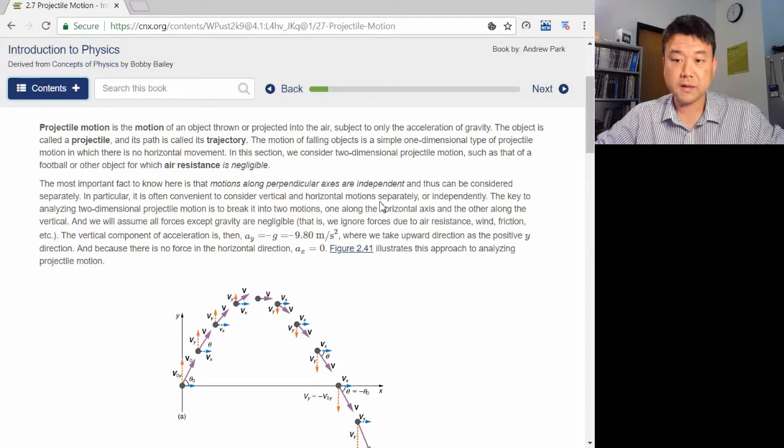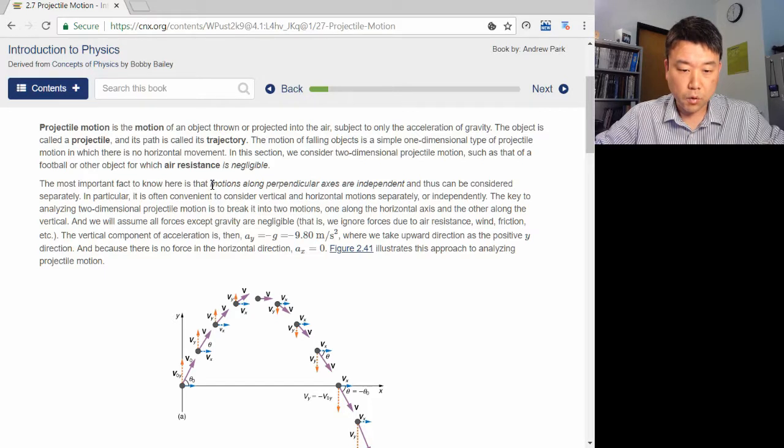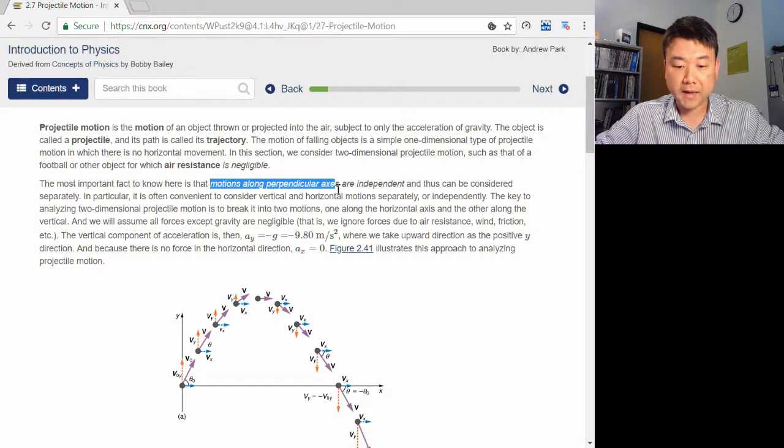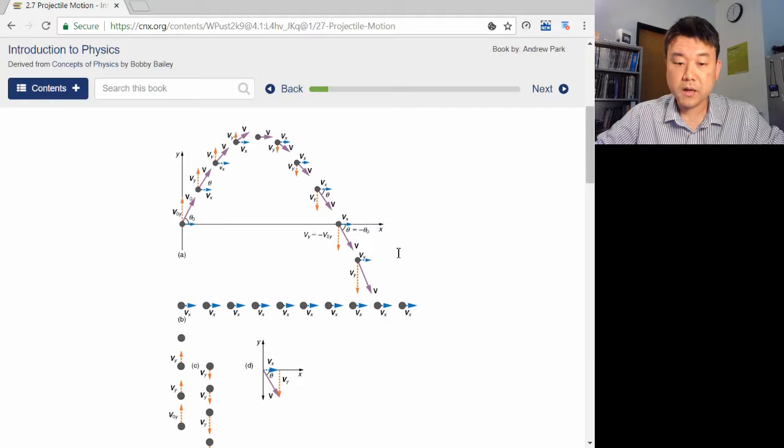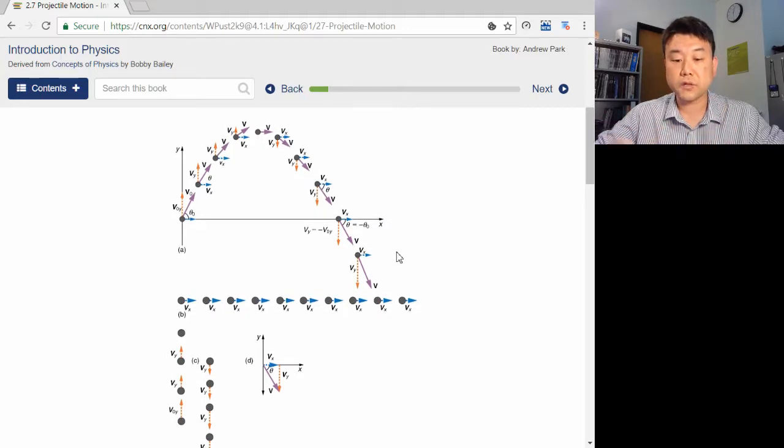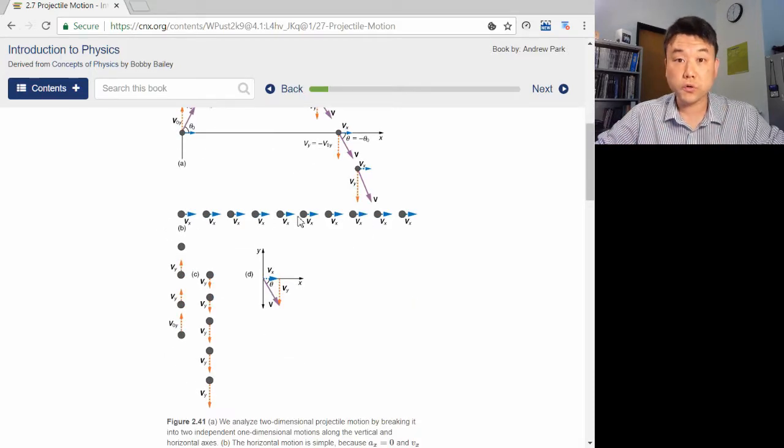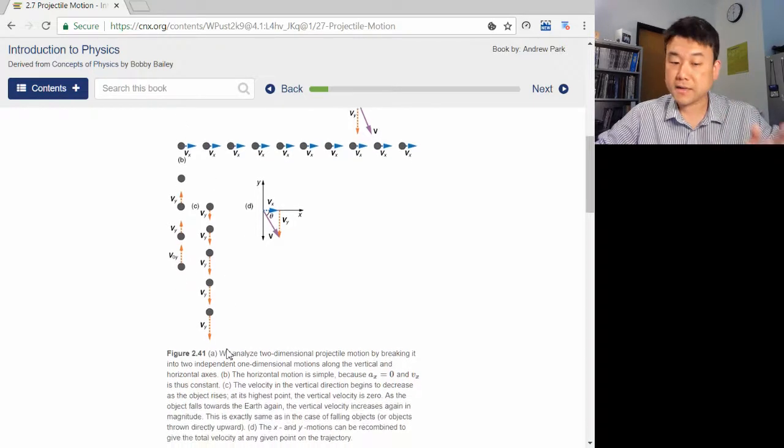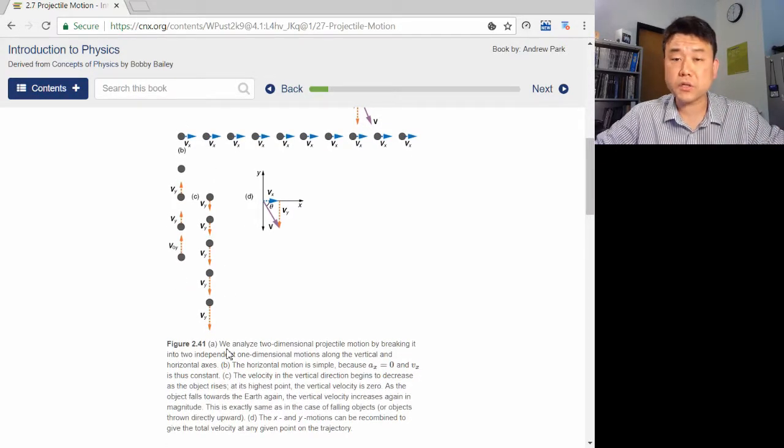The most important thing to get with projectile motion is that motions along perpendicular axes, that is vertical and horizontal axes, are independent. And that's what this figure is showing, those two motions being broken up into horizontal motion and vertical motion. As I said, there will be an essay assignment to explore this in more detail, but I just wanted to mention that now.